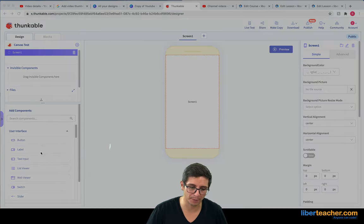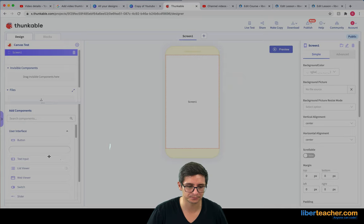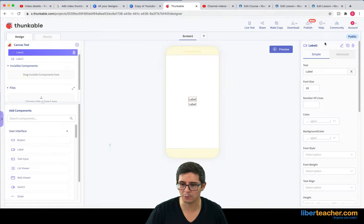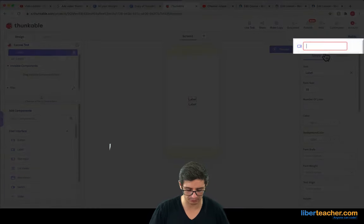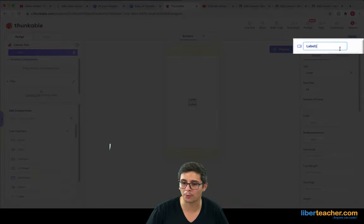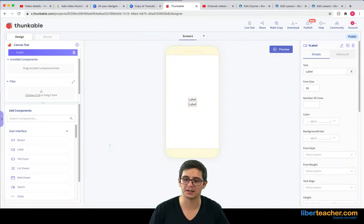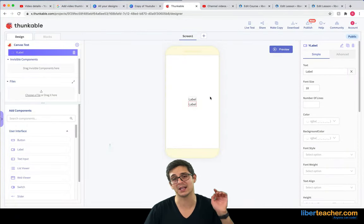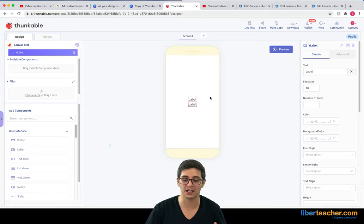I'm going to start off by grabbing two labels, and I'm going to name one label xlabel, and I'm going to name the other label ylabel. And the reason why I'm doing that is I want the xlabel to show me the x position of where I'm touching, and the ylabel to show me the y position of where I'm touching.